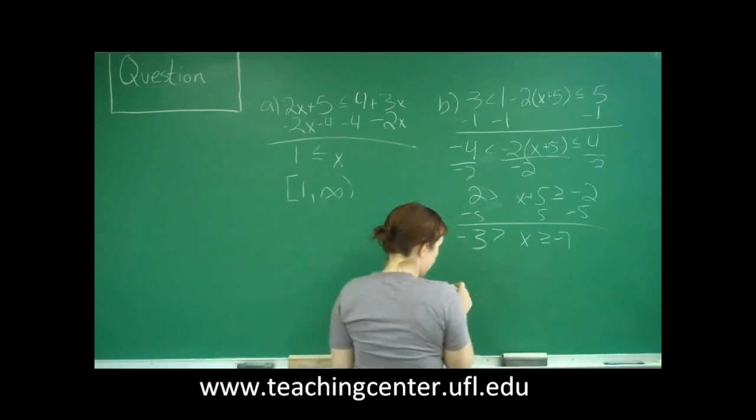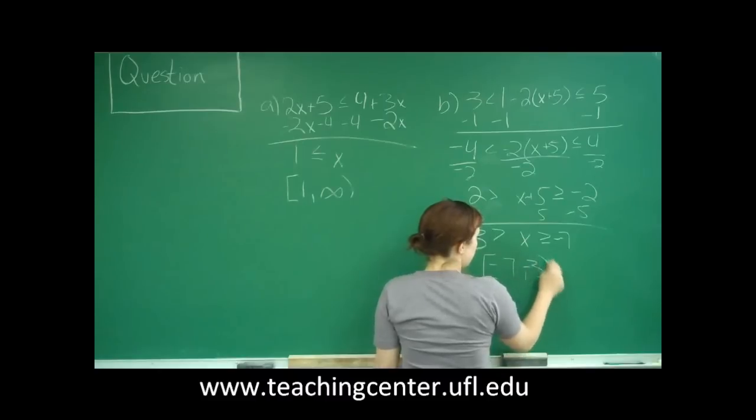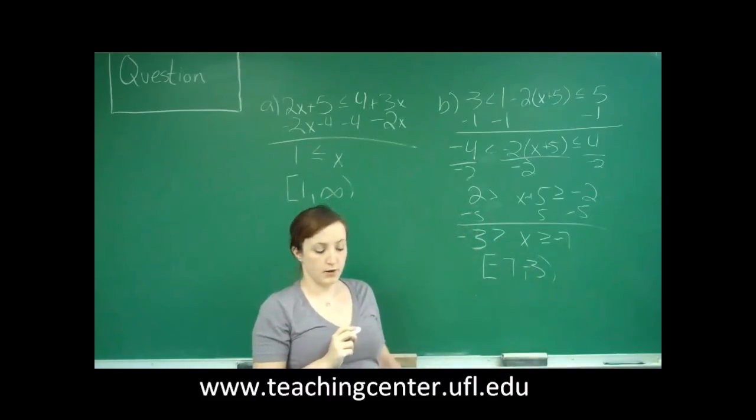which is greater than or equal to negative 7. So to write that again in interval notation, we would have bracket negative 7 comma negative 3 in parentheses because we don't have an equal sign underneath that greater than.